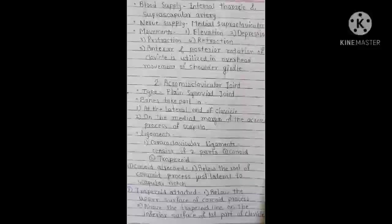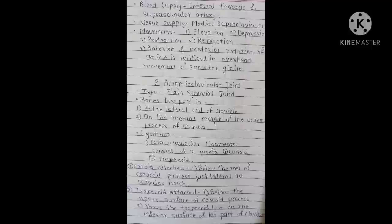Blood supply of the sternoclavicular joint is from the internal thoracic and suprascapular artery. Nerve supply is the medial supraclavicular nerve. Movements at this joint are elevation, depression, protraction, retraction, and posterior rotation of the clavicle. It is utilized in the overhead movement of the shoulder girdle.